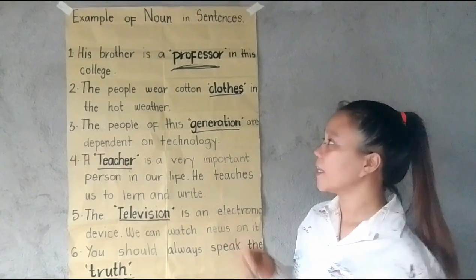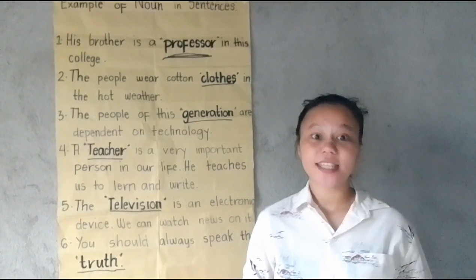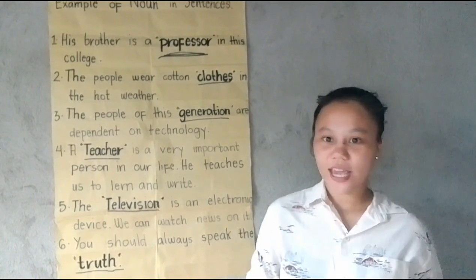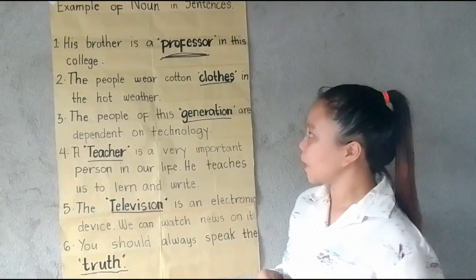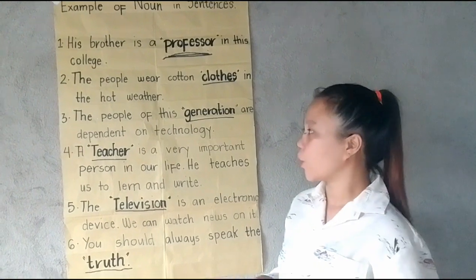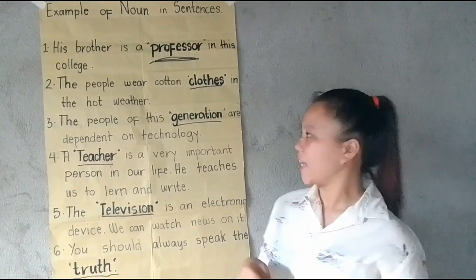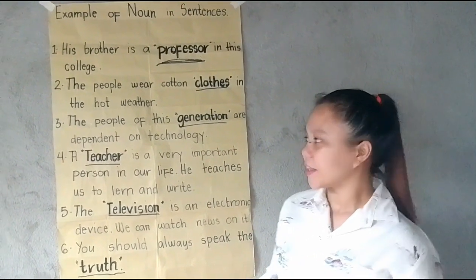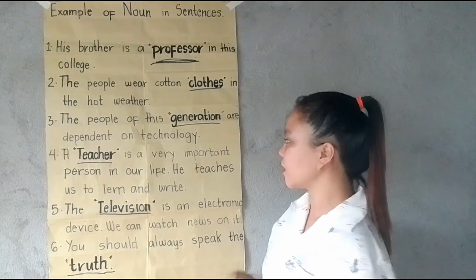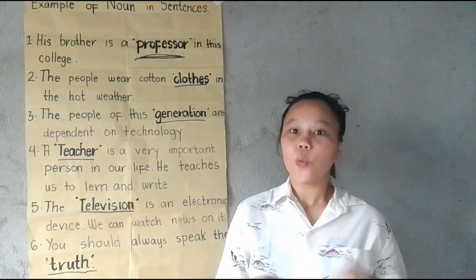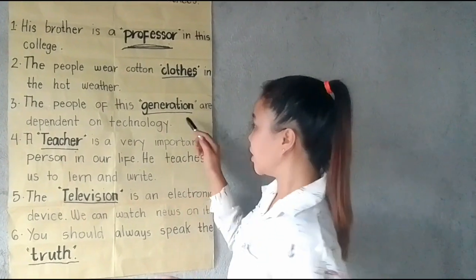Let's look at some example sentences. Number one: His brother is a professor in this college. Class, what is the noun in this sentence? Very good — the professor. Number two: The people wear cotton clothes in the hot weather. Class, what is the noun? Number three: The people of this generation are dependent on technology. What is the noun in this sentence? Very good — the generation.